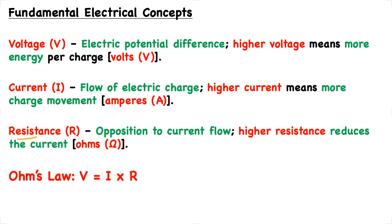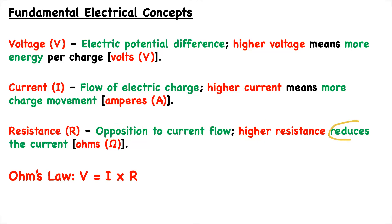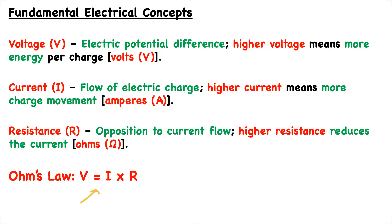Then lastly we have the resistance, R. The resistance is the opposition to current flow. A higher resistance results in a reduction in the current, and the resistance is expressed in ohms. This brings us to Ohm's Law, which is a very simple expression that relates the three: V equals IR.